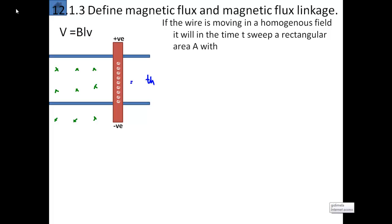So the wire, the metal conductor, is sweeping through a homogeneous field which means it's the same everywhere. The field strength doesn't vary. In a certain time t it will sweep out an area A.